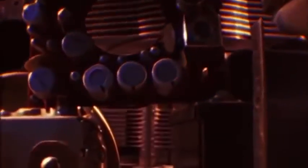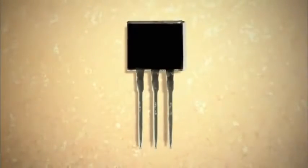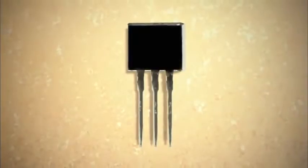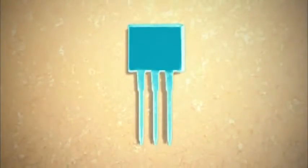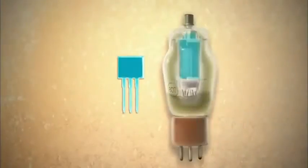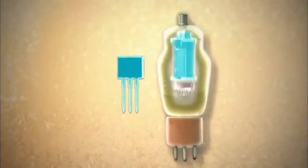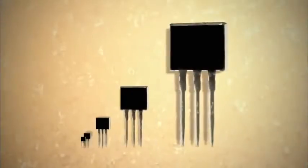Early computers used mechanical relays and vacuum tubes as switches. Building a machine with just a few thousand took up rooms of space. But the silicon transistor changed all that. Because it's a material, not a machine, it's easy to shrink.